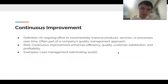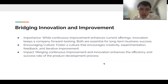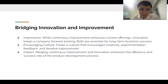You've also got to have continuous improvement in your product. This is an ongoing effort that incrementally improves products, services, or processes over time, and it enhances efficiency and quality. A key example is lean management, which eliminates waste from your product — something I believe I touched on a couple of lessons ago. While continuous improvement enhances current offerings, innovation keeps the company forward-looking, and both are essential for long-term business success. A culture that encourages creativity, experimentation, feedback, and iterative improvement brings them together.